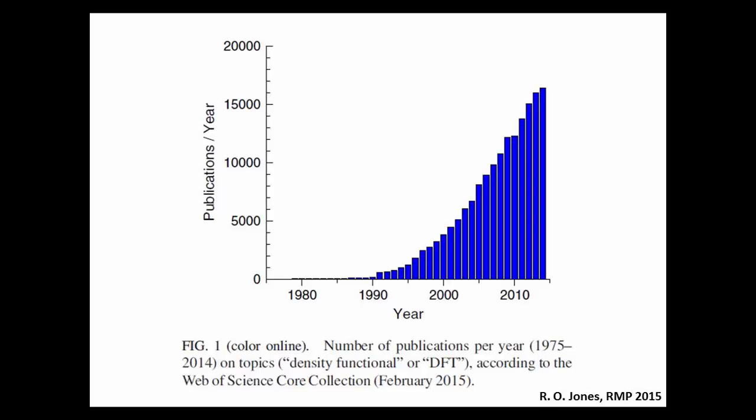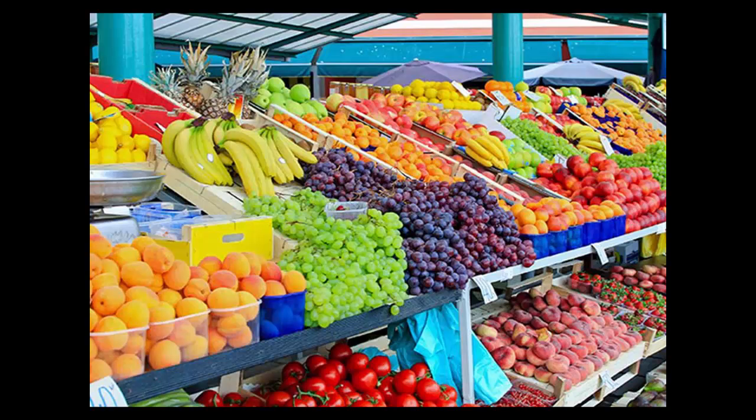It has become a kind of commodity product that researchers in other fields use to solve their problems. They go to their scientific supermarket, take DFT from the shelf, and apply it to their problem. What makes a commodity product really a commodity product? It's one special feature. People trust commodity products.